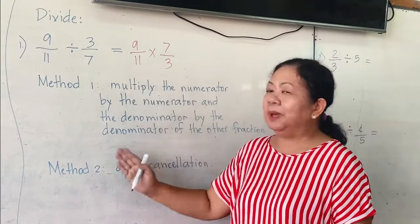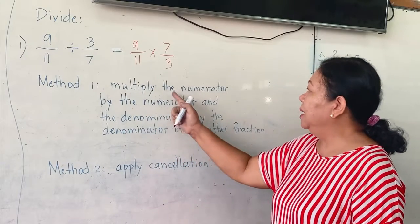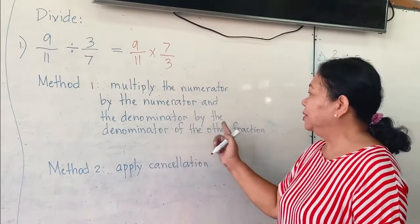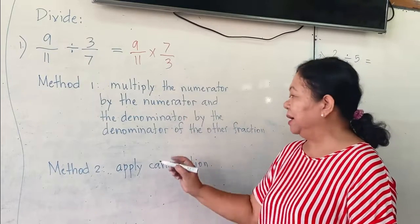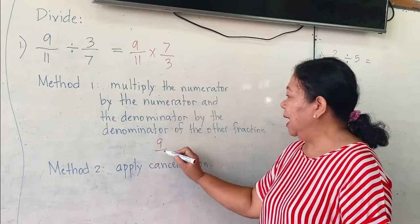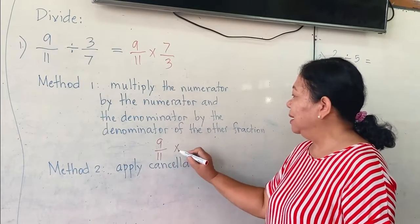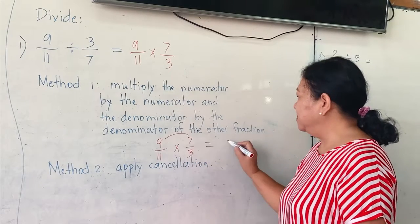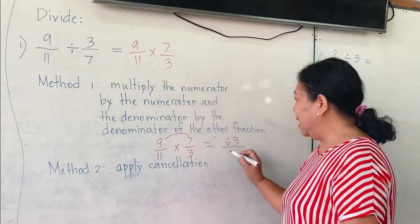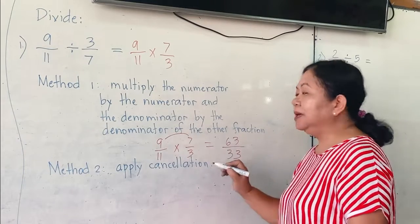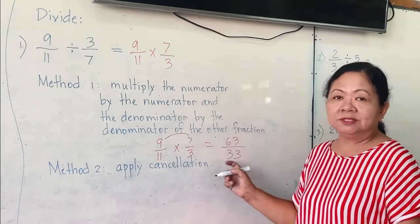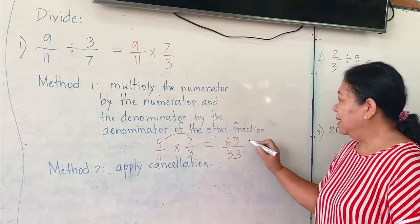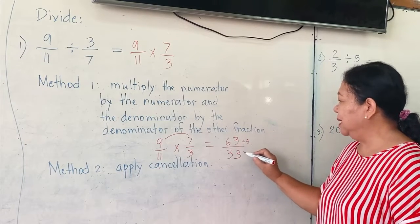Now, there are two methods to do this. Method one: you will multiply the numerator by the numerator and the denominator by the denominator of the other fraction. So here, we have nine over eleven times seven over three. We will just multiply this. Nine times seven is sixty-three, and eleven times three is thirty-three. After that, we need to simplify the fraction. So we can divide this by three — divide by three, divide by three.